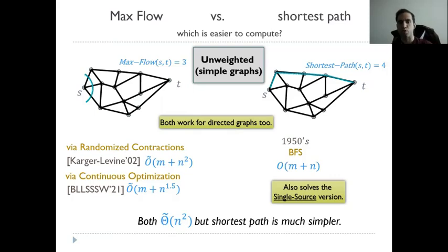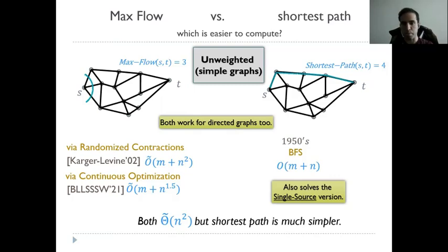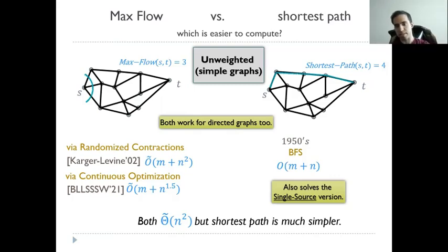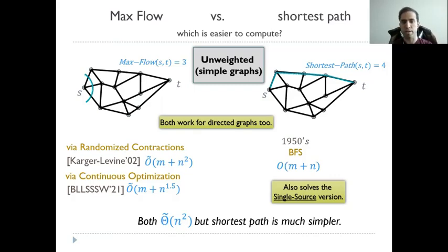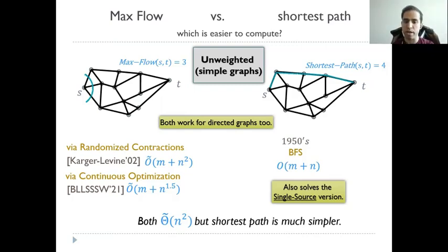What if we're talking about unweighted graphs? We have the BFS algorithm from the 1950s that runs in time m plus n, while the algorithms for maximum flow have been more complex. Both of them can be solved in n-squared time, but the shortest path seems much simpler.